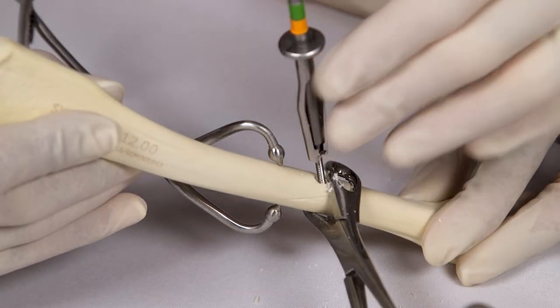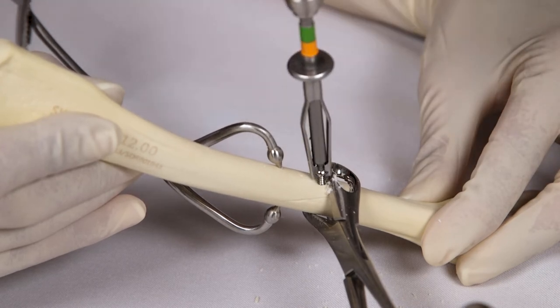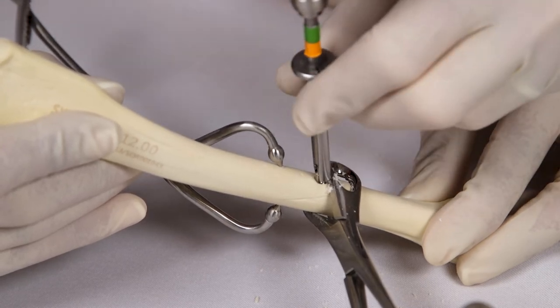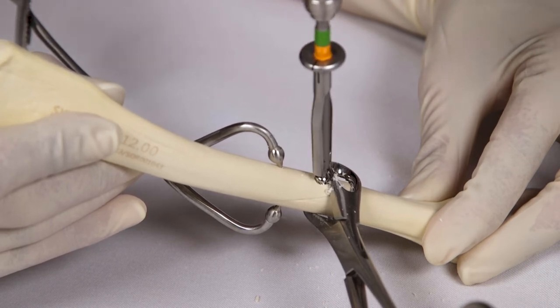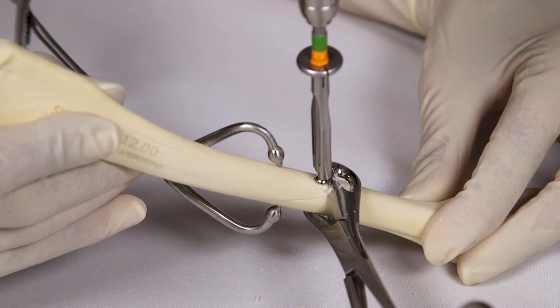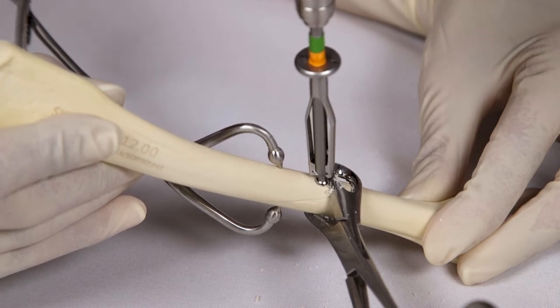When the lag screw is inserted, the screw thread will only grip in the far cortex, which creates compression across the fracture line as the screw is tightened. Care must be taken not to over-tighten a lag screw, as there is a risk of fracturing the bone.